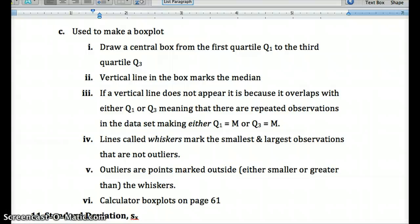And that'll happen at times where we have a mode, a data point that repeats several times. So if there's no box, if you're looking for a line in there but there's no line, it's because the median is either equal to Q1 or Q3.